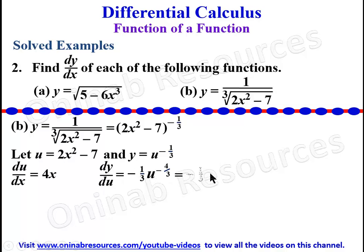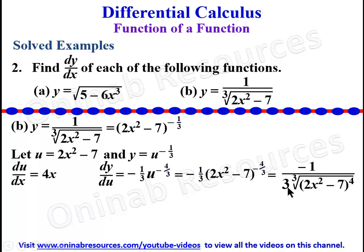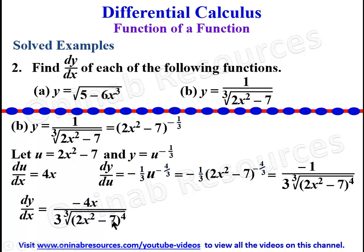For dy/du: multiply by the index -1/3 and subtract 1 from the index: -1/3 - 1 = -4/3, giving dy/du = (-1/3)u^(-4/3). Substituting back u = 2x² - 7: dy/du = (-1/3)(2x² - 7)^(-4/3). Finally, dy/dx = du/dx × dy/du = 4x × (-1/3)(2x² - 7)^(-4/3) = -4x / (3(2x² - 7)^(4/3)). This is the derivative of the function in problem 2b.